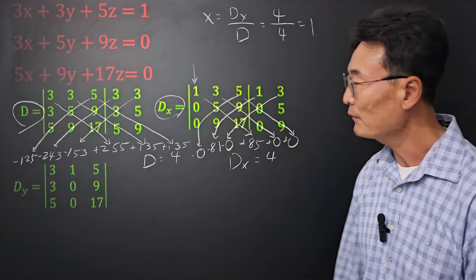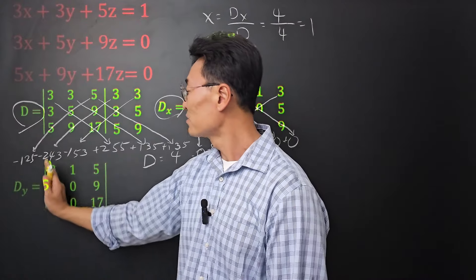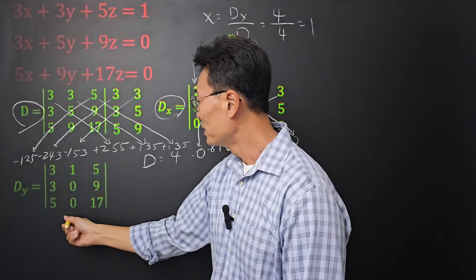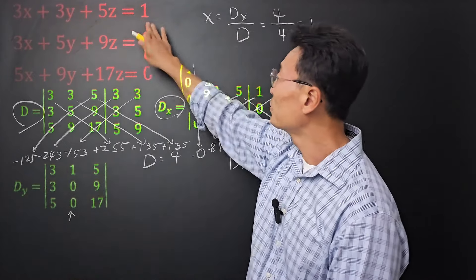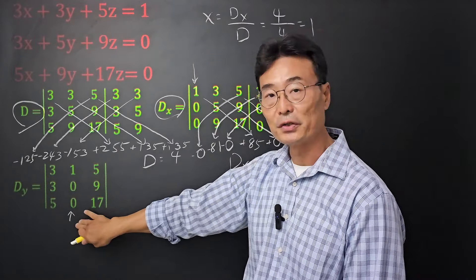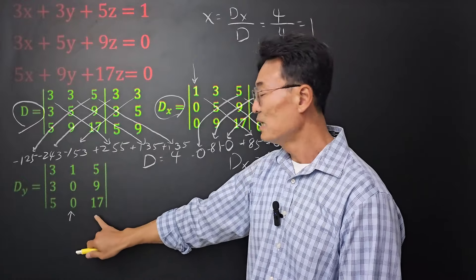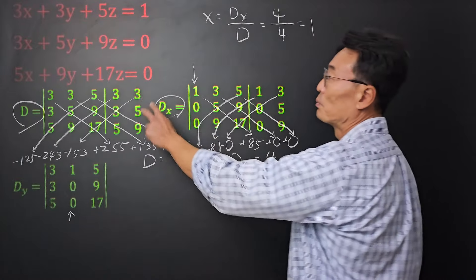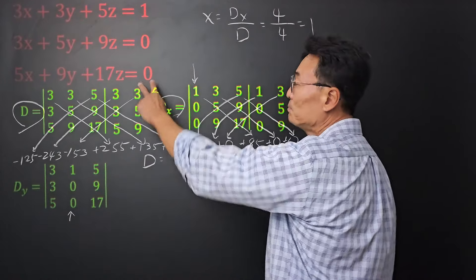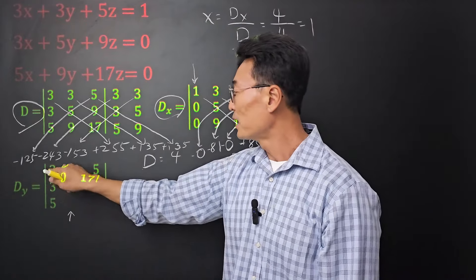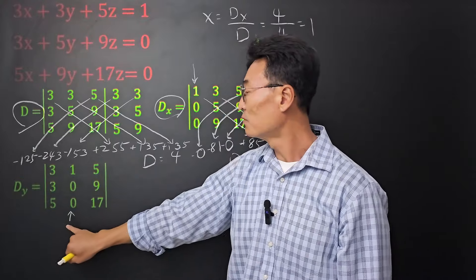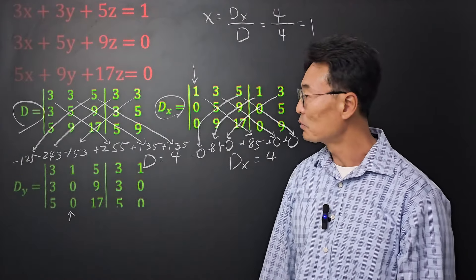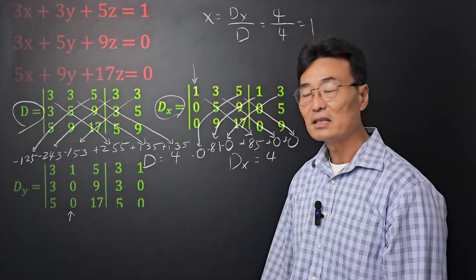Now let's continue with dy. For dy, we leave the x coefficients (3, 3, 5) alone, but replace the y coefficients (3, 5, 9) with the right-hand side values: 1, 0, 0. The z coefficients (5, 9, 17) stay the same. Using the same shortcut, we rewrite the first and second columns on the right side and multiply.